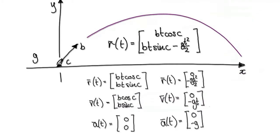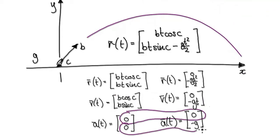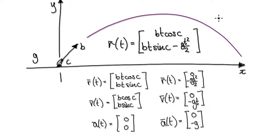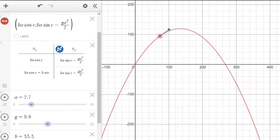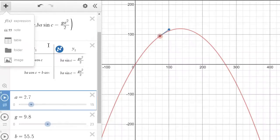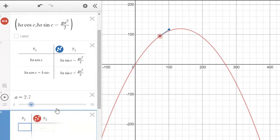Now for the acceleration vector. The acceleration vector is the combination of zero in the x direction and minus g in the y direction, so the acceleration vector is (0, −g) — it acts straight down.